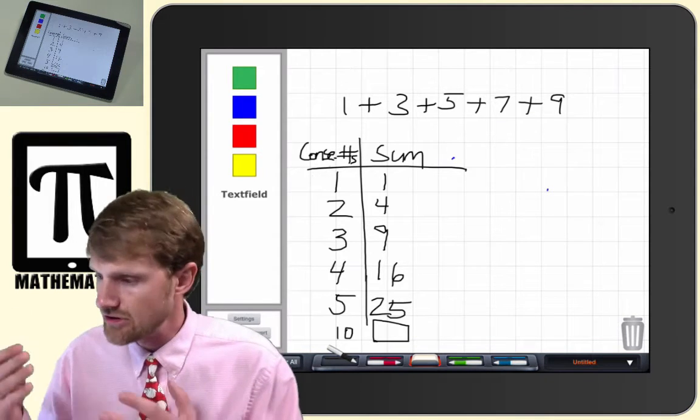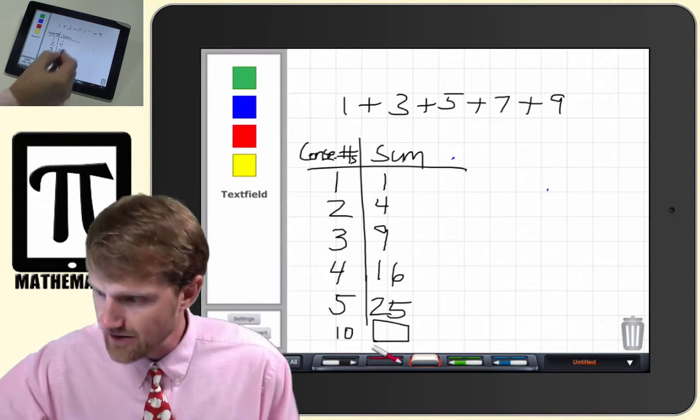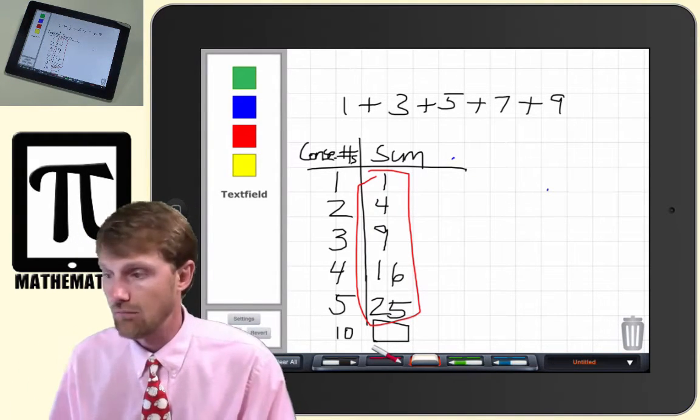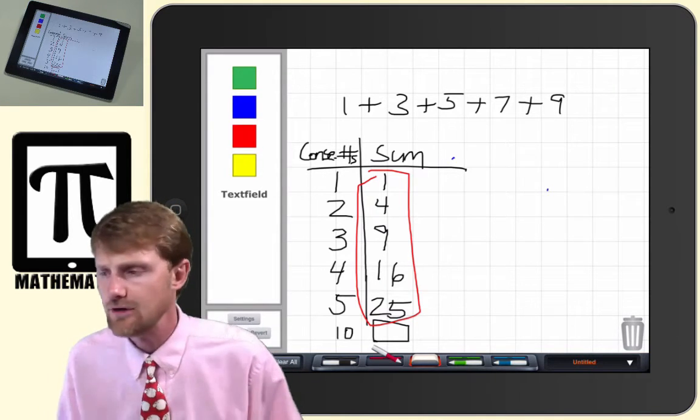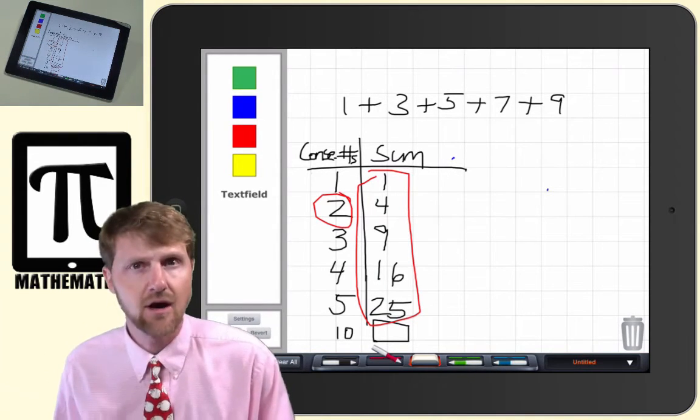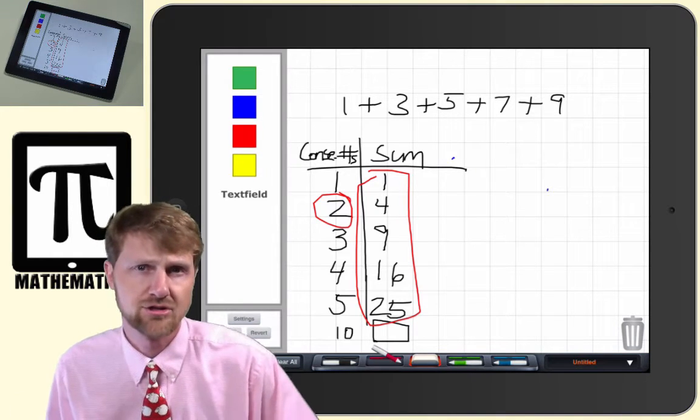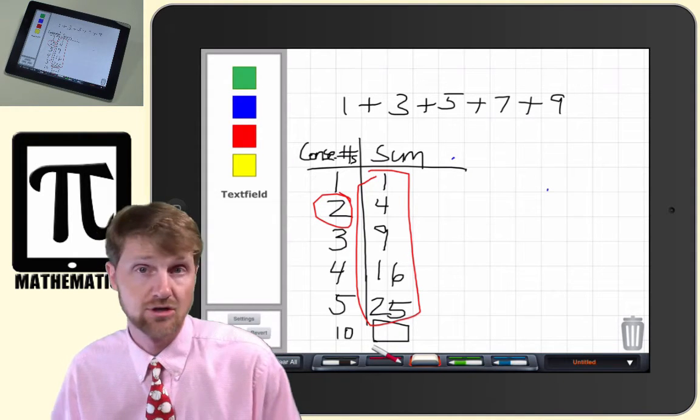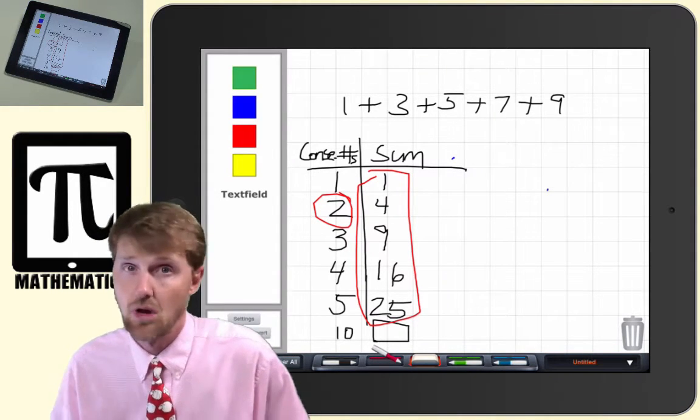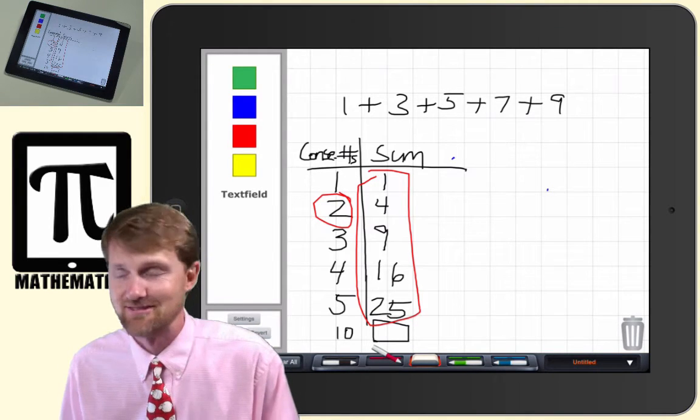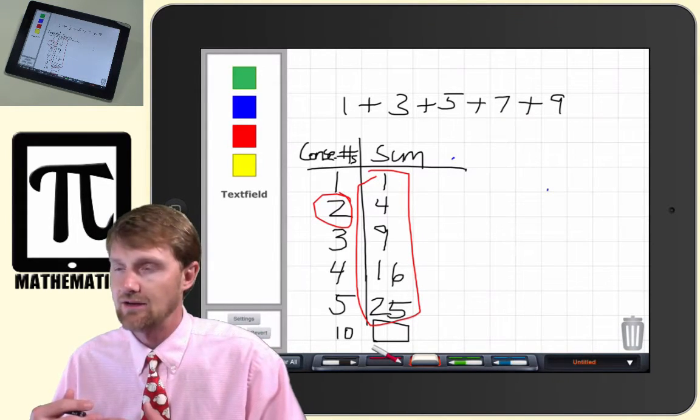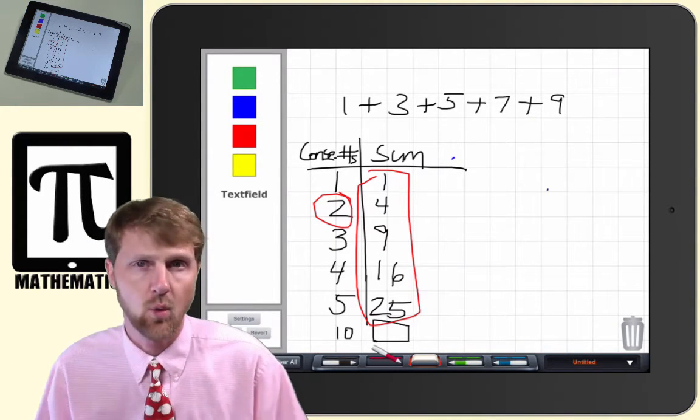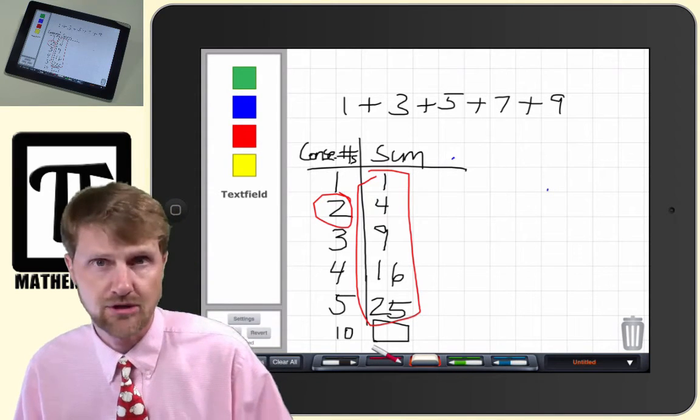Ideally, you'd want students to just look right at those sums, these values right here, and see, well, these are the square numbers. I got it. No problem. You take the number of consecutive odd numbers and you square it, and that tells you the sum. So, if I want to find 100 consecutive odd numbers, the sum is going to be 100 squared, which is a big number, 10,000.